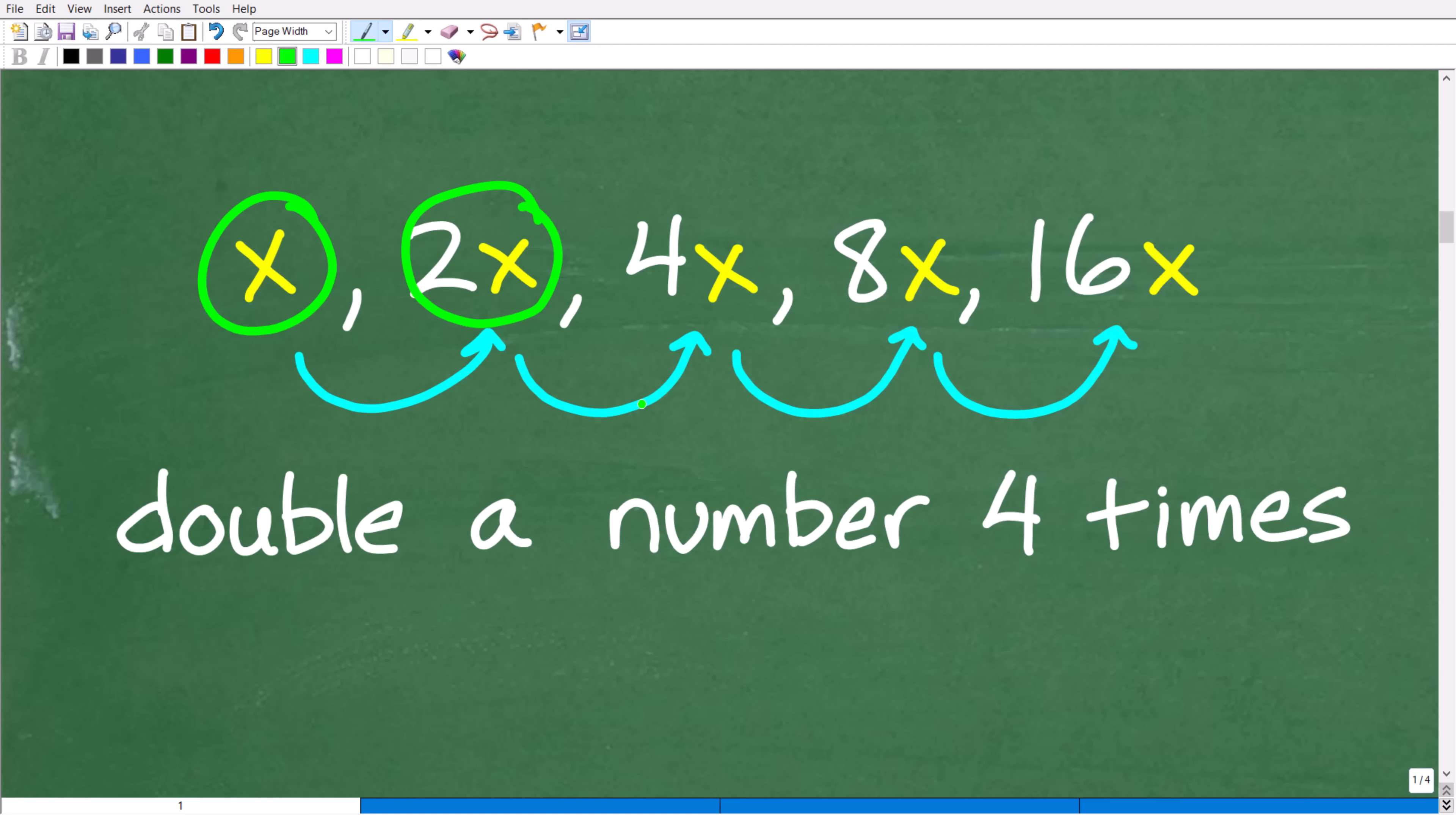Our second double is going to be 2x times 2, right? We're going to double this thing right here. So, 2x times 2 is going to be 4x, because 2 times 2x. Remember, you multiply the coefficient. So, 2 times 2 is 4x. So, this is our second double.